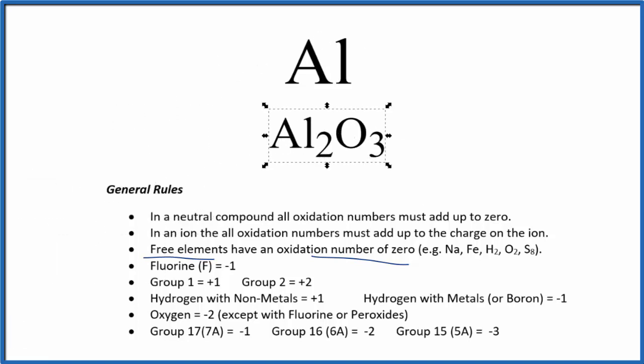here's aluminum oxide, Al2O3. If we look at aluminum oxide, we can figure out this oxygen here. Oxygen is always minus two, except with fluorine or peroxide. So here, oxygen is going to be minus two. Three times minus two equals minus six.